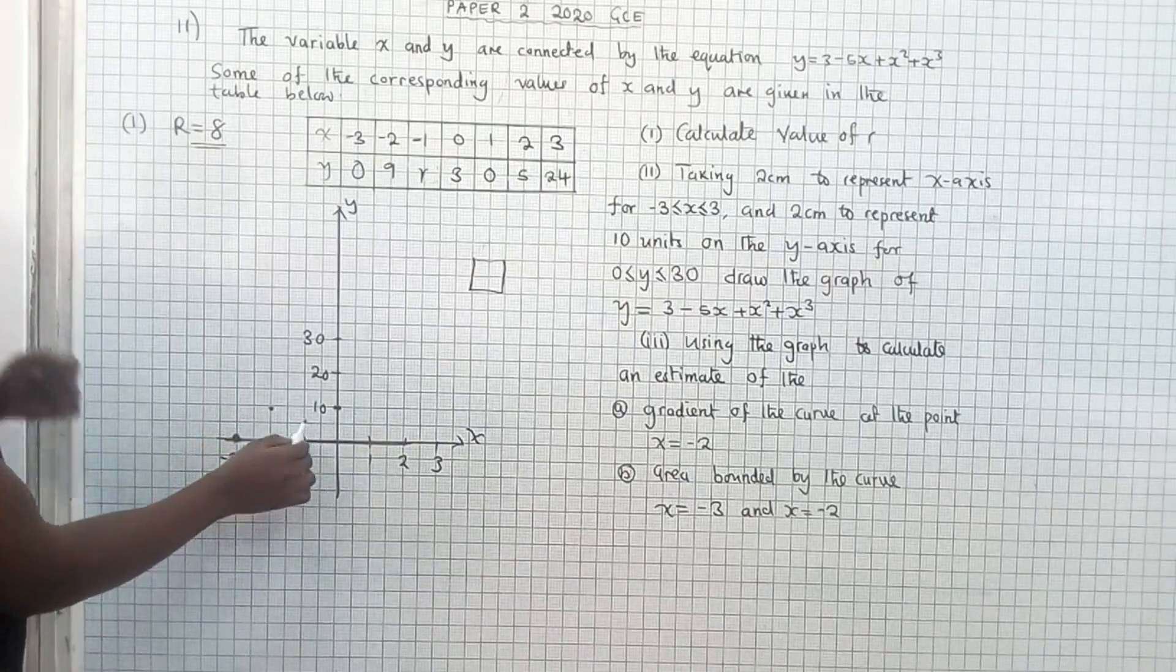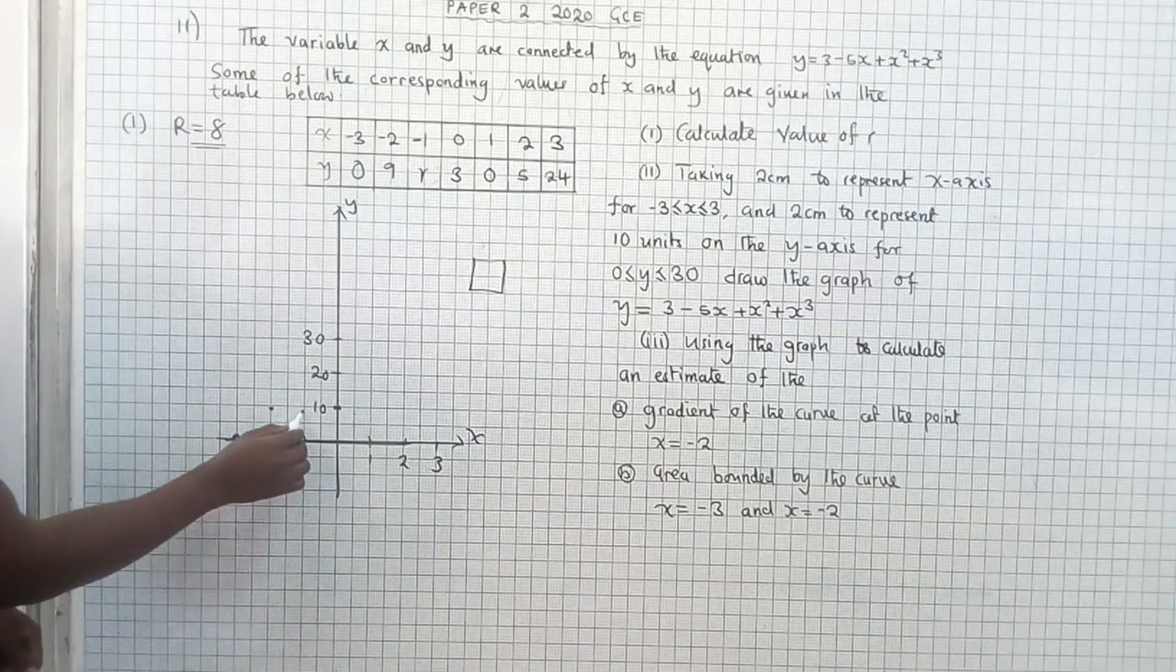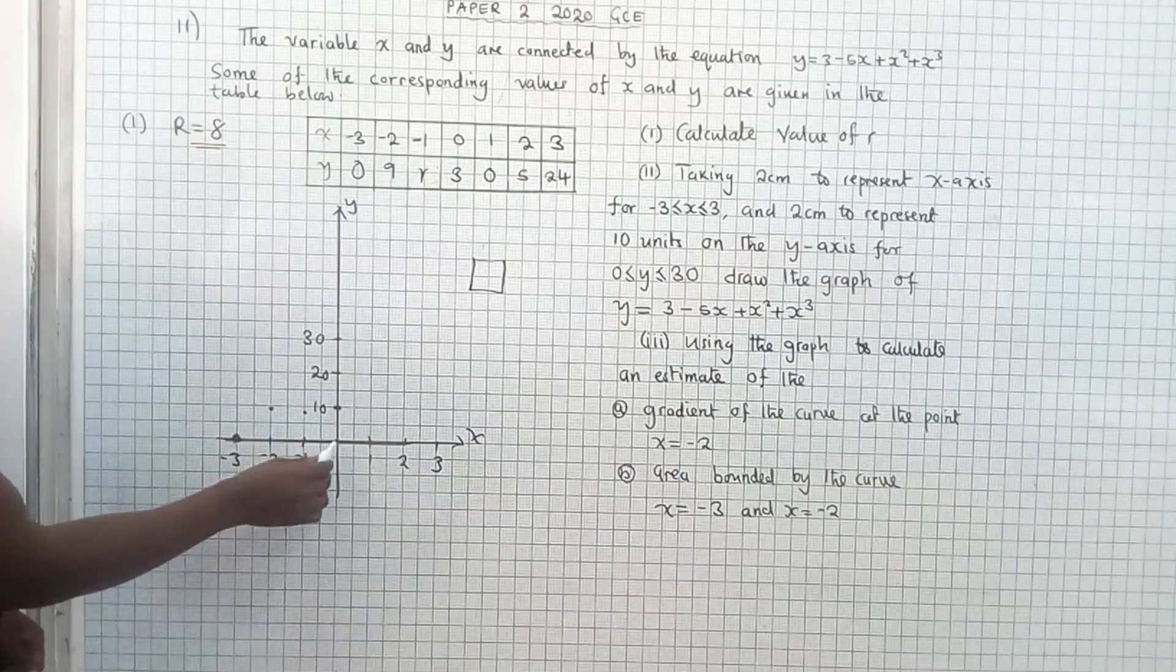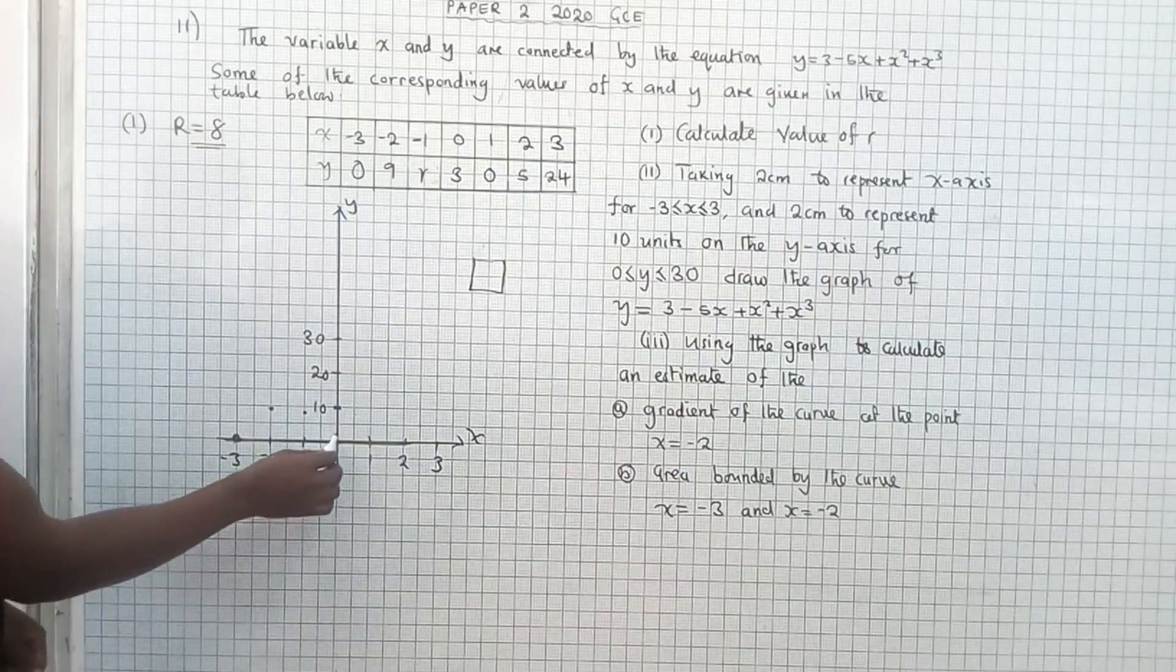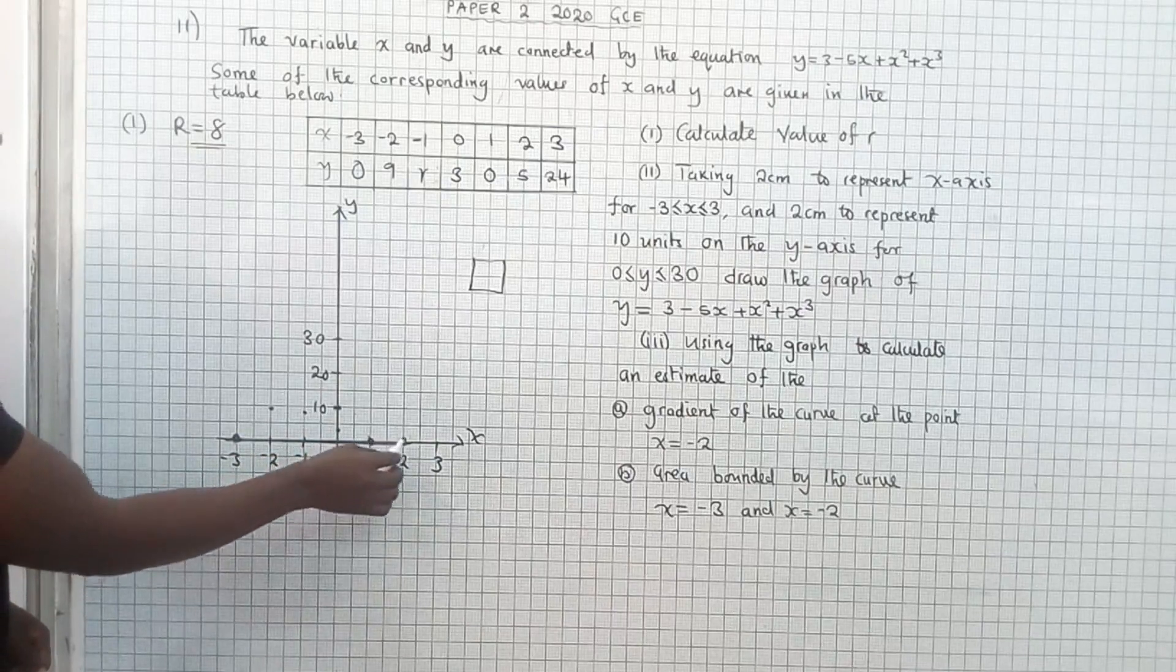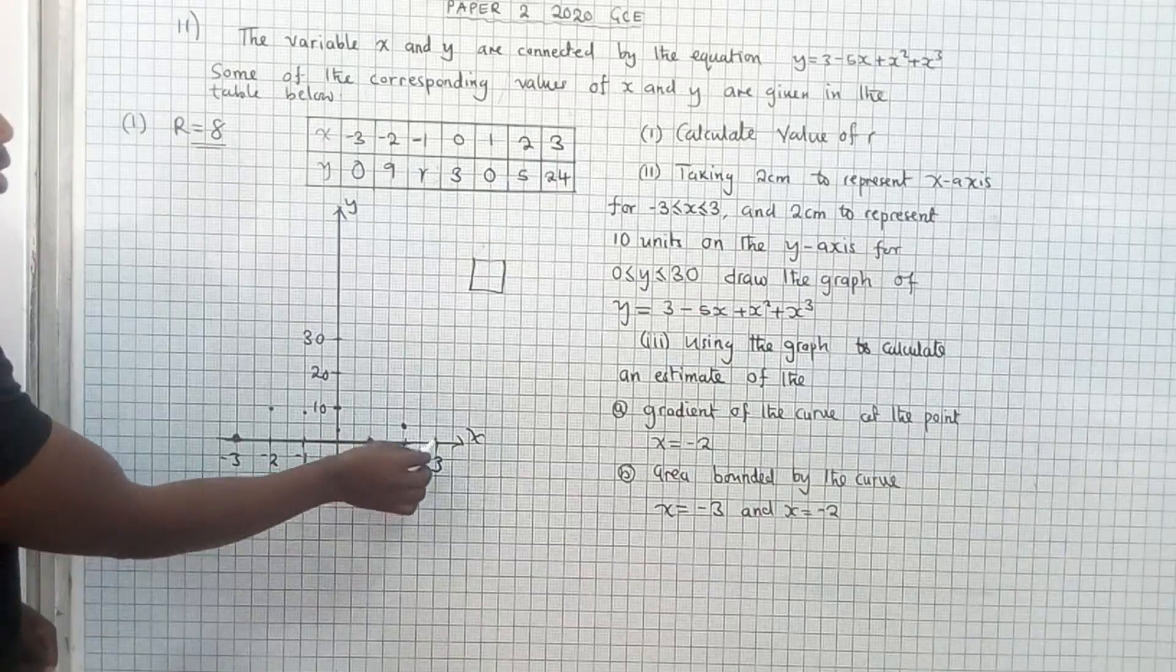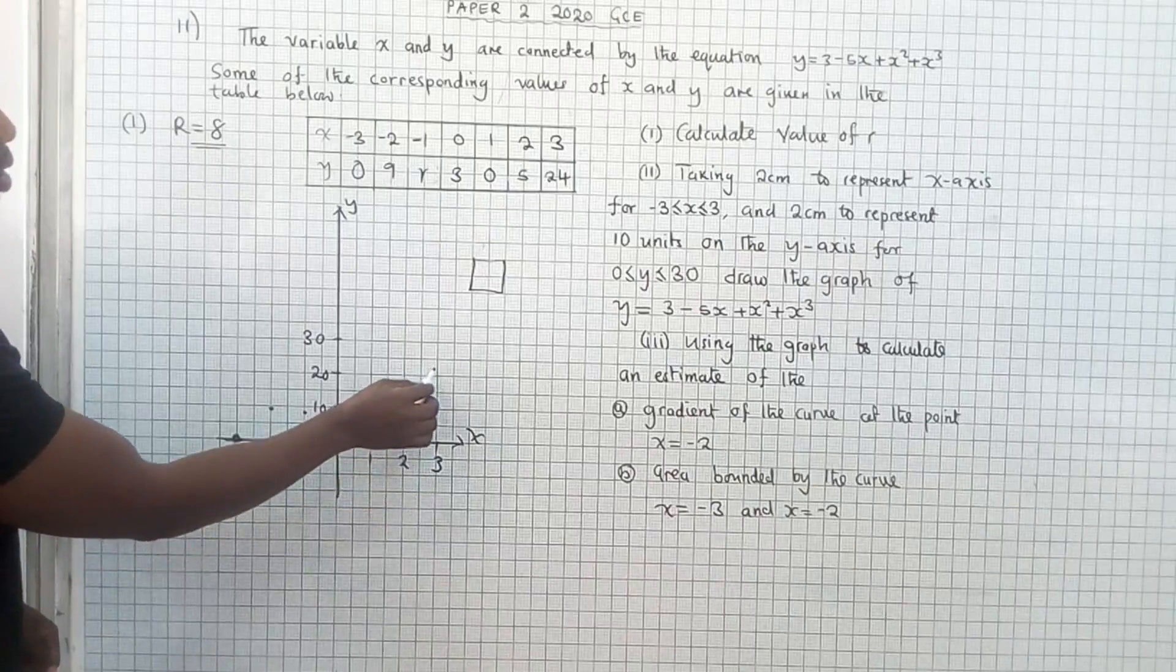And the next one is negative 1, 8. It's over here. Next one is 0, 3. It's over here. Next one, 1, 0. It's here. And then go to 2, 5. And 3, 24 over here.